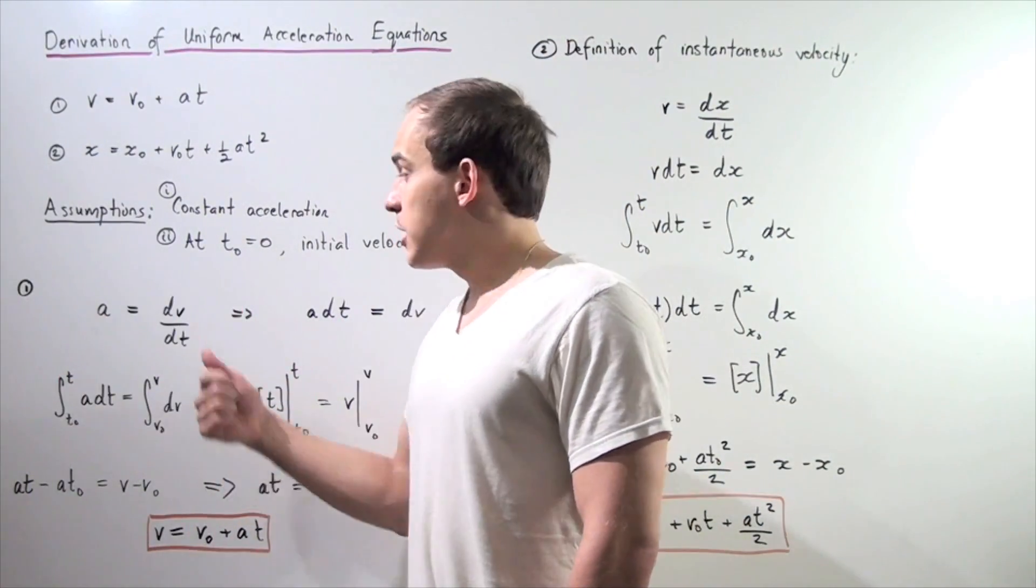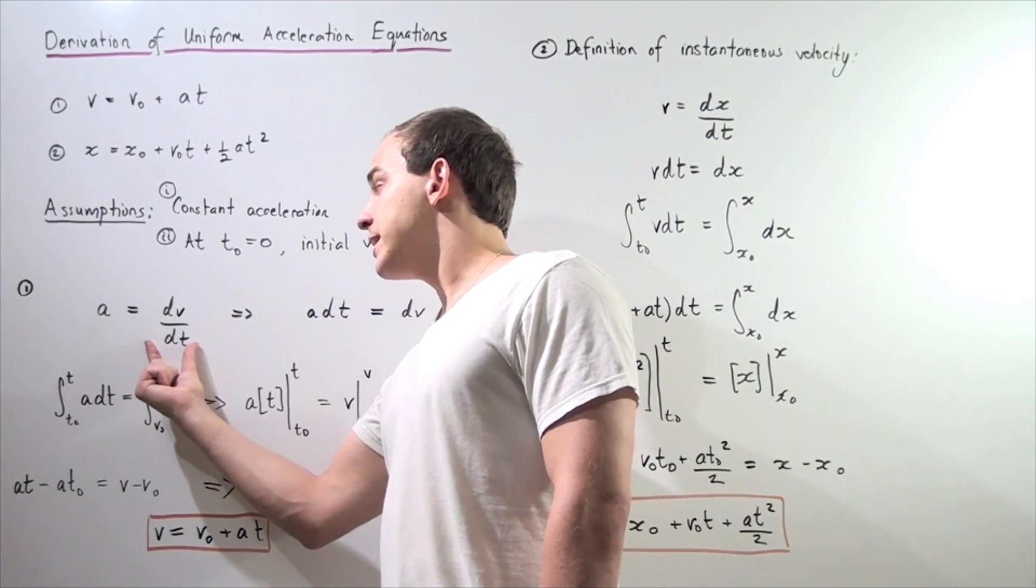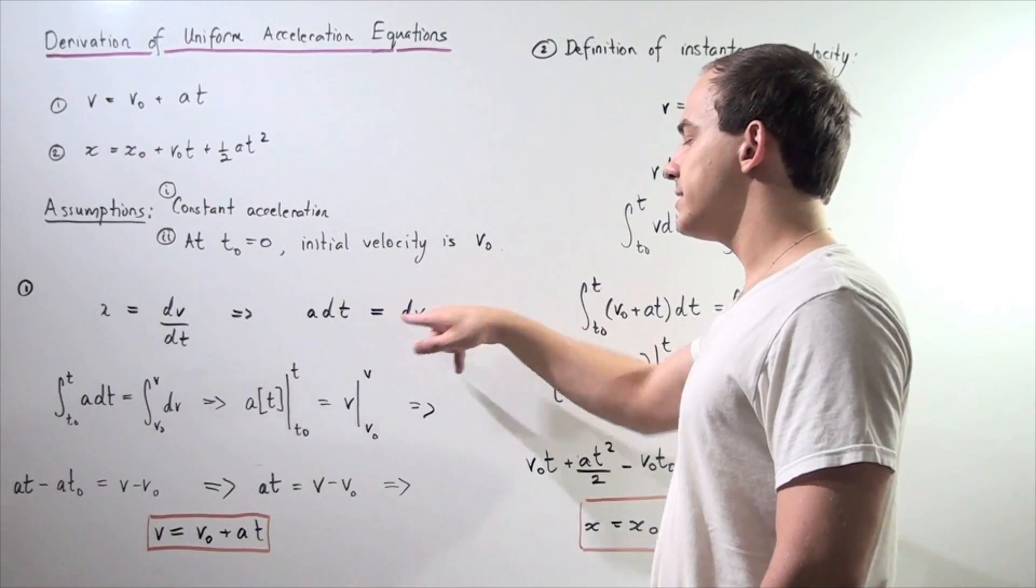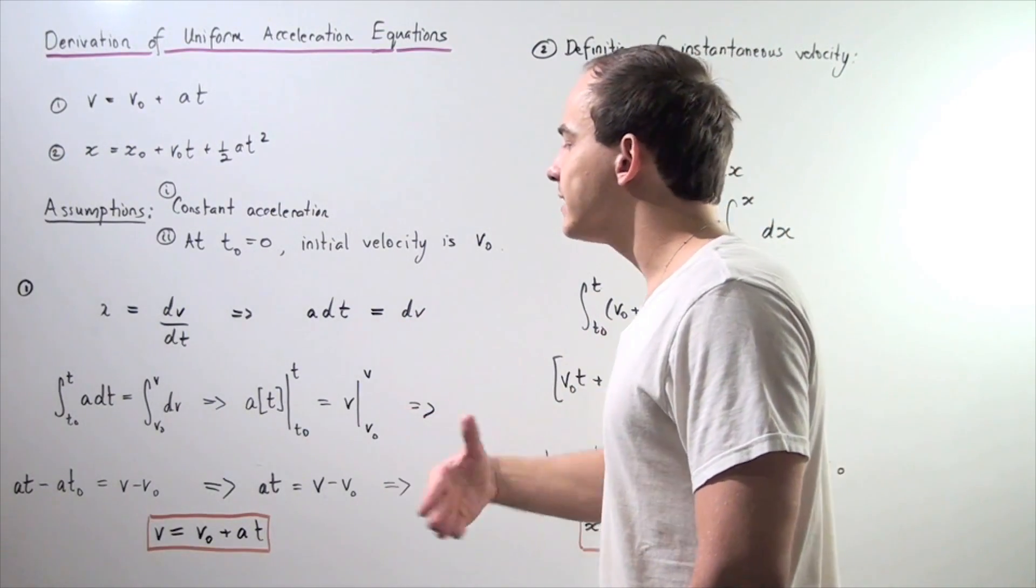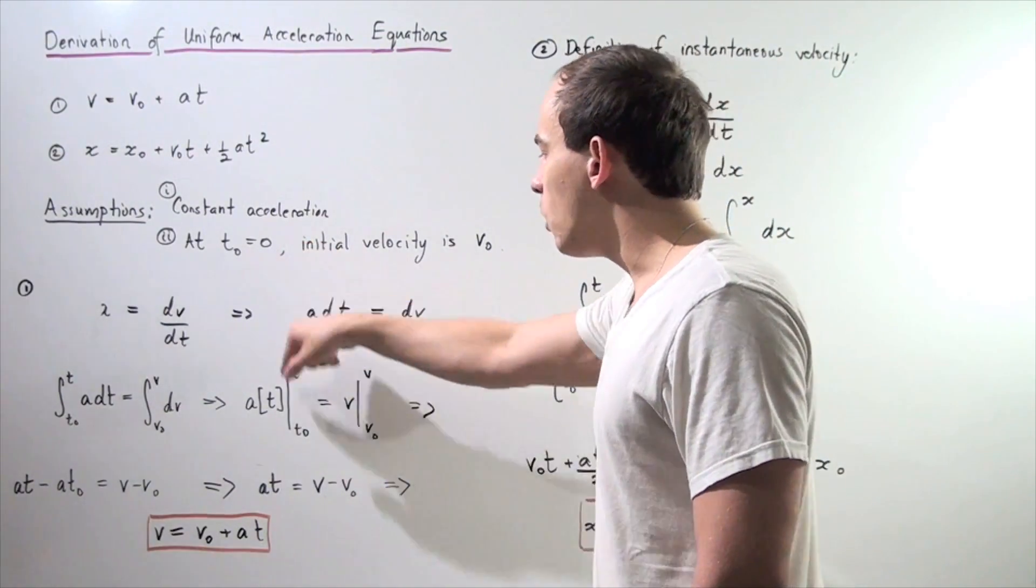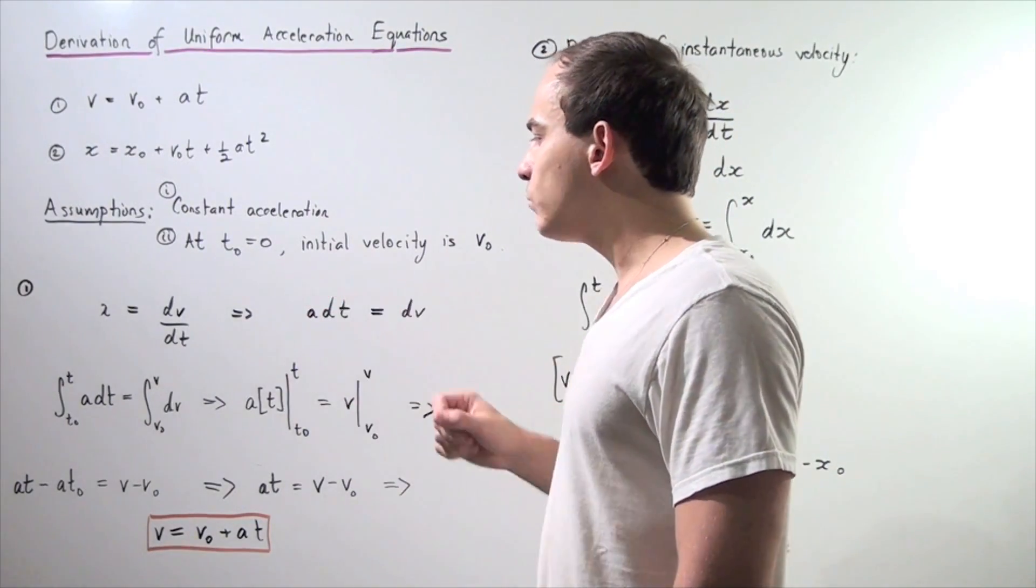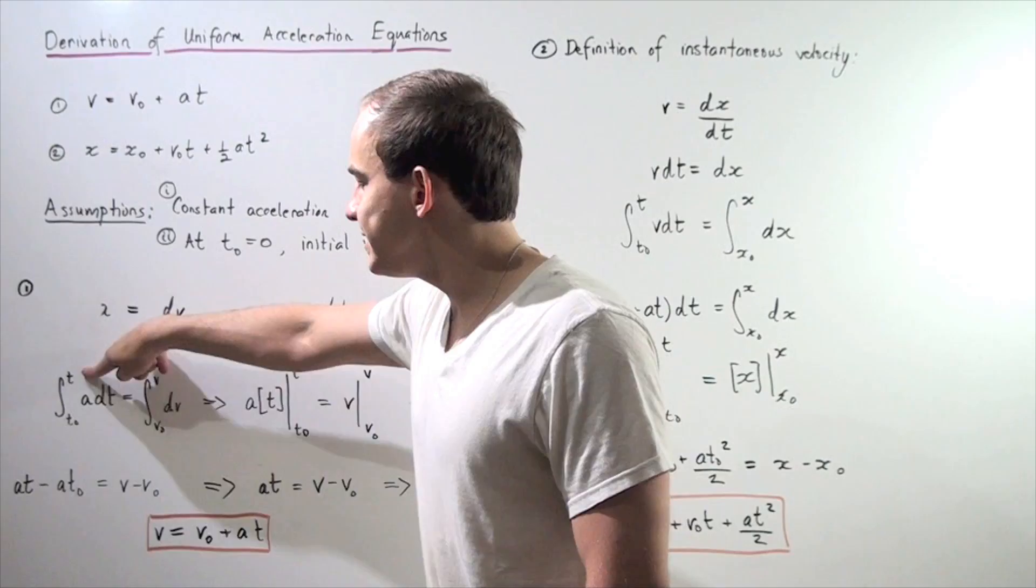Let's rearrange this formula by bringing our dt to the A side. We get A times dt equals dv. Now, let's take the definite integral of both sides. If we take the definite integral of this side, we take it from t-naught equals zero to t.